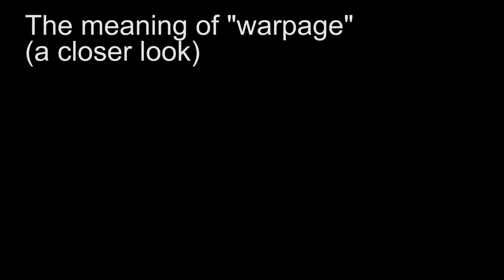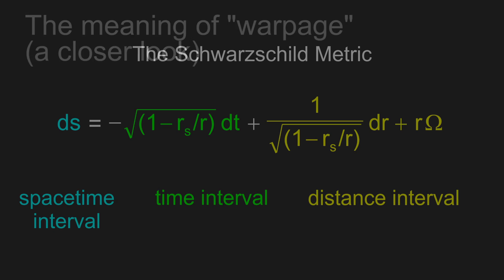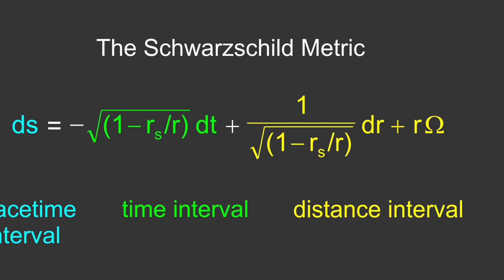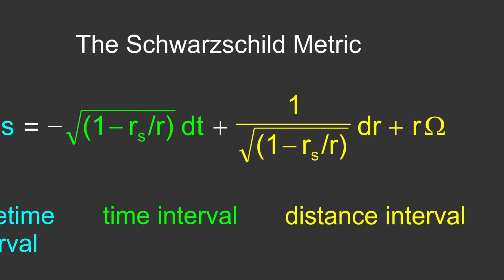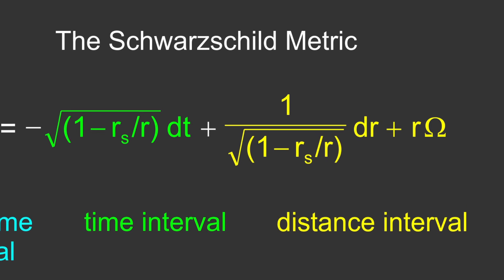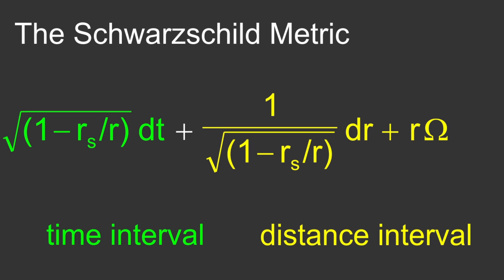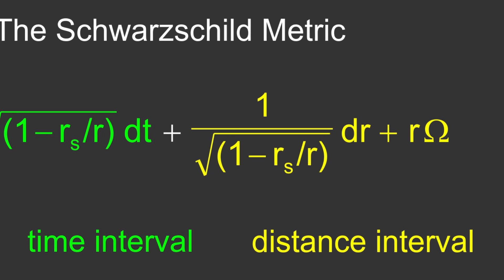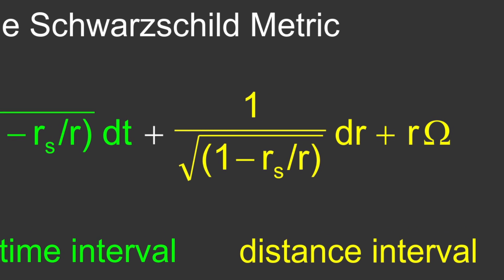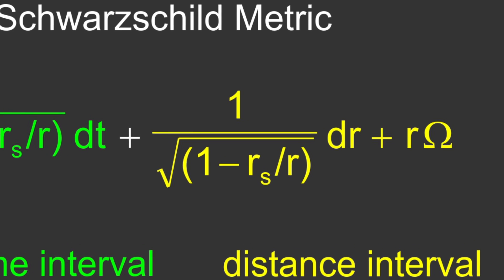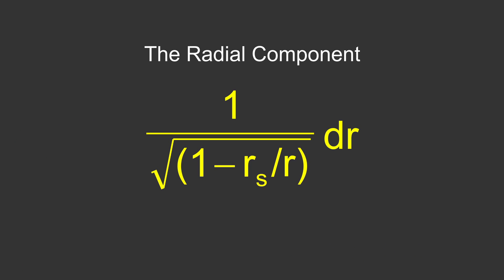In the cavitation theory of matter, the term warpage takes on a particularly simple meaning. The full Schwarzschild metric is the set of rules for measuring time intervals and distances between events taking place in the warped space around a massive object. The objective of the cavitation theory of matter, however, is simply to describe the static condition of space itself at a given instant of time, a much simpler task, and one that requires only a part of the Schwarzschild metric, the part called the radial component.